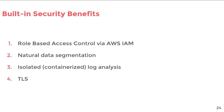A huge benefit of being on AWS is that we get built-in security features. With StreamAlert, we ensure that all resources follow the principle of least privilege by using IAM roles. Our data transport, processing, and storage is also segmented, sort of like a production versus corporate environment. All code is run in an isolated, containerized environment, and all data sent into StreamAlert uses TLS.